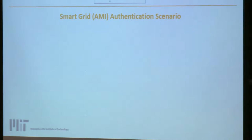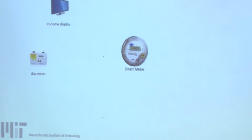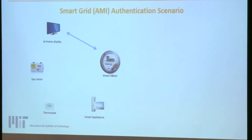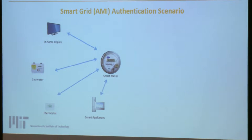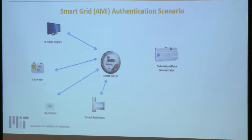To put things together, here is an example of a communication scenario in a smart home to shed light on the importance of authentication. In smart homes we normally have a smart meter connected to home appliances. Smart home appliances send their energy consumptions as messages to the smart meter, and the smart meter sends command and control messages back to the appliances. The smart meter aggregates these readings and sends them in batches to the data concentrator, which sends them to the utility company.